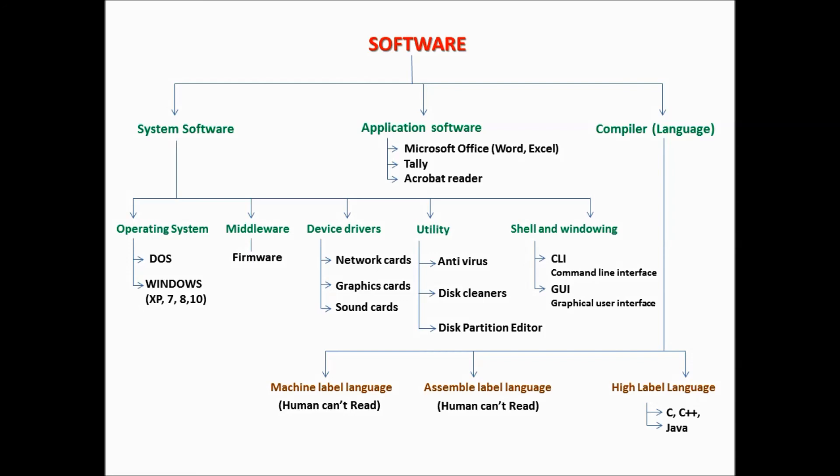Compiler or language types: machine level language — humans can't read this; assembly level language — humans can't read; and high level language, like C, C++, Java — which humans can read.